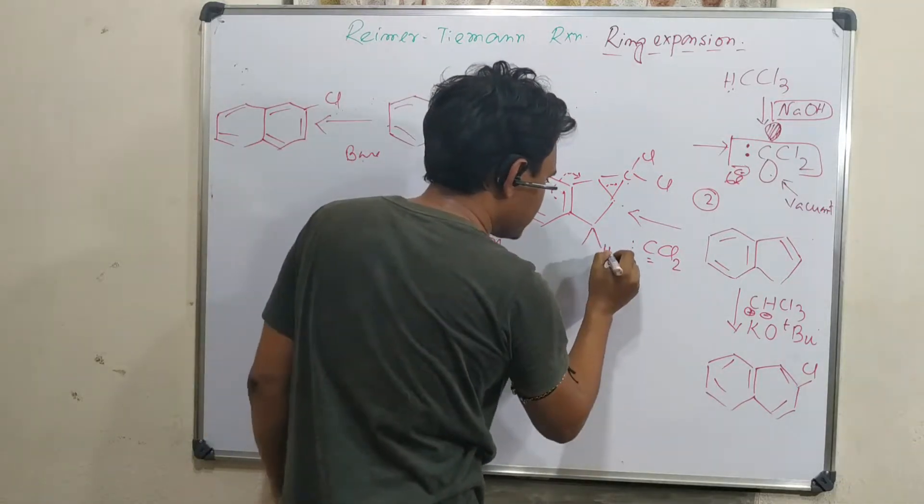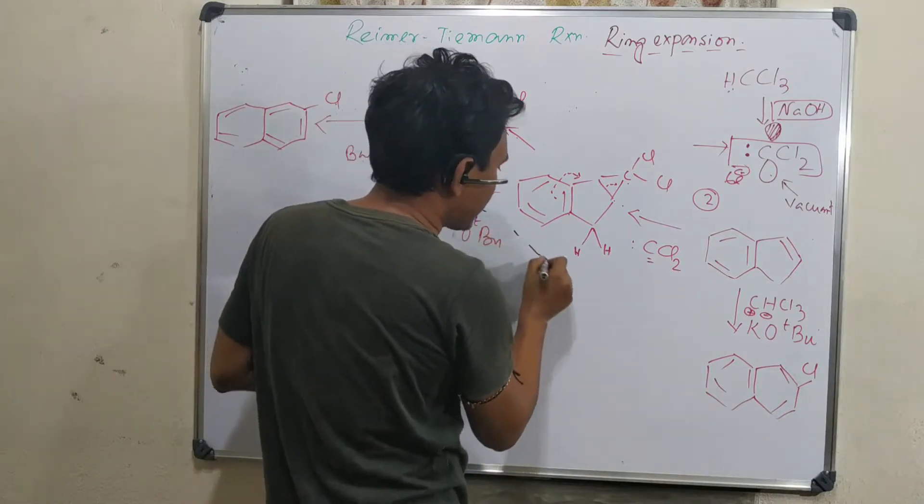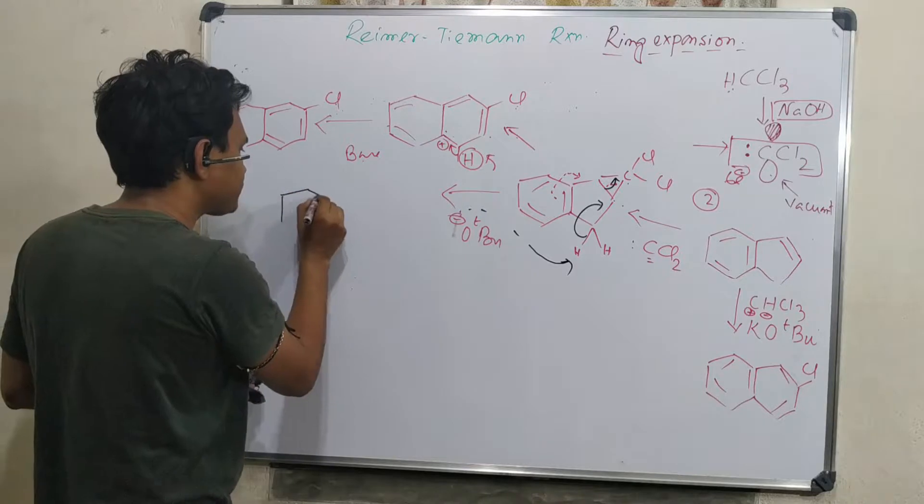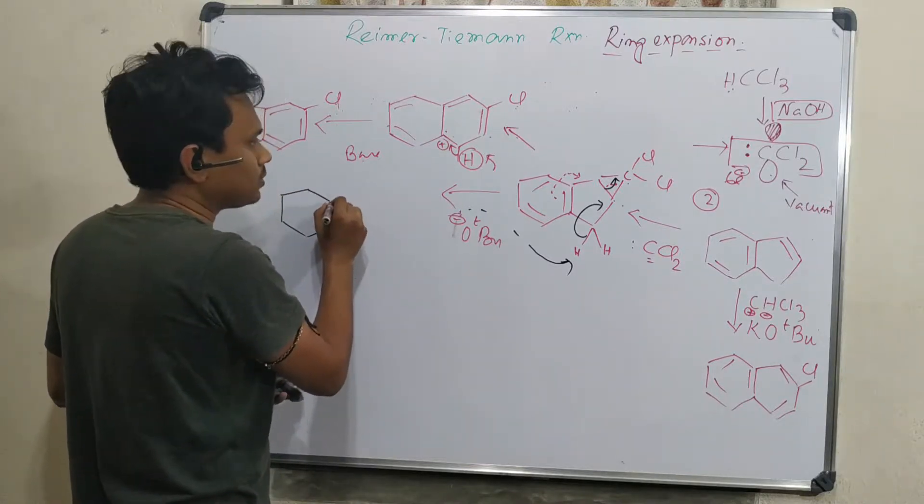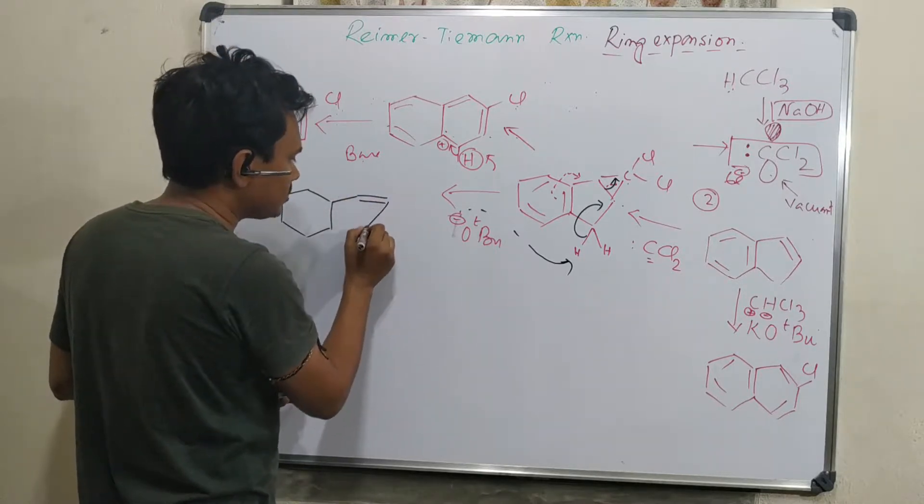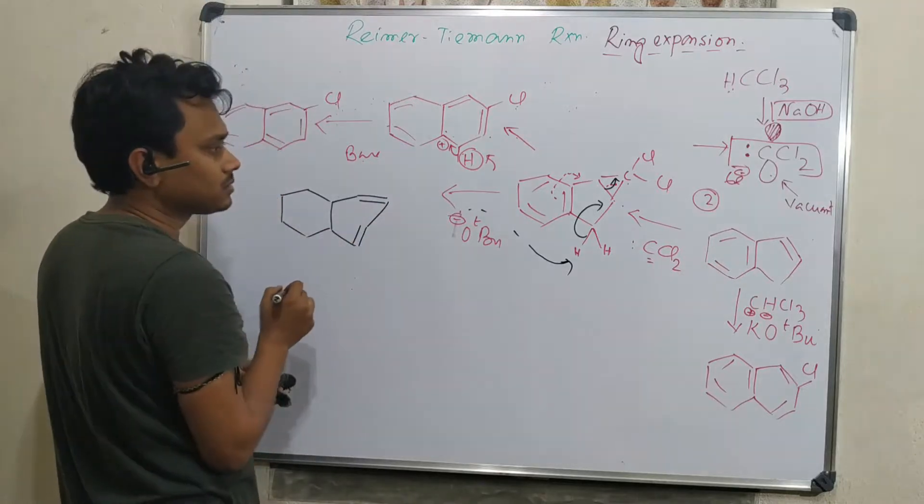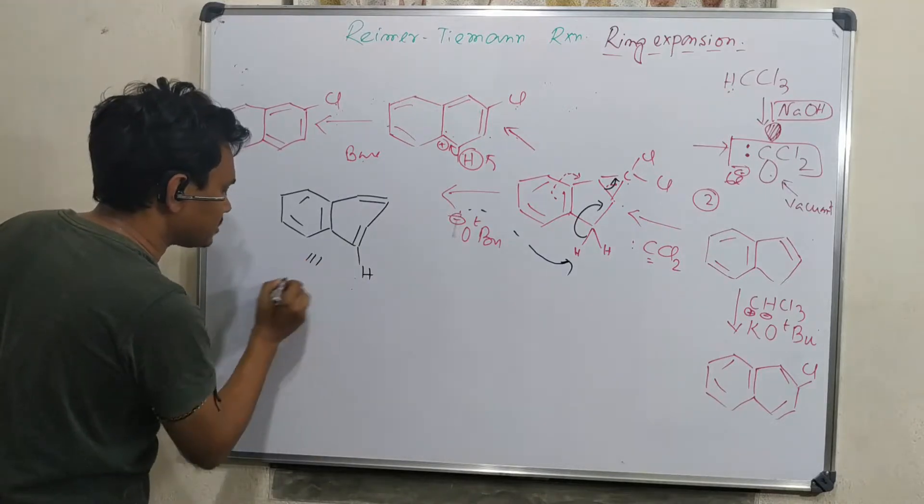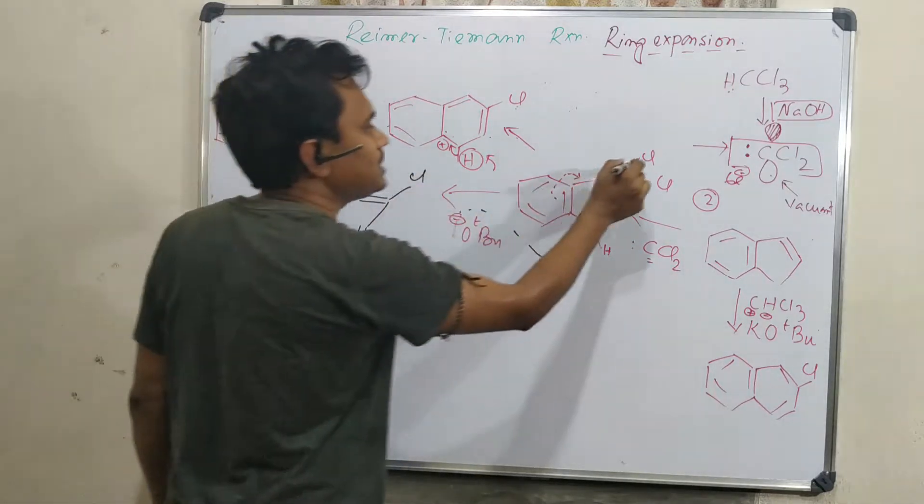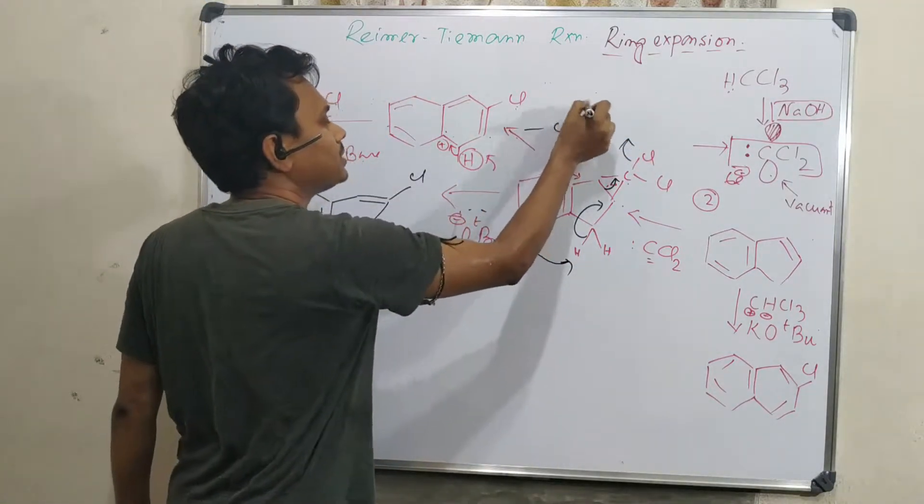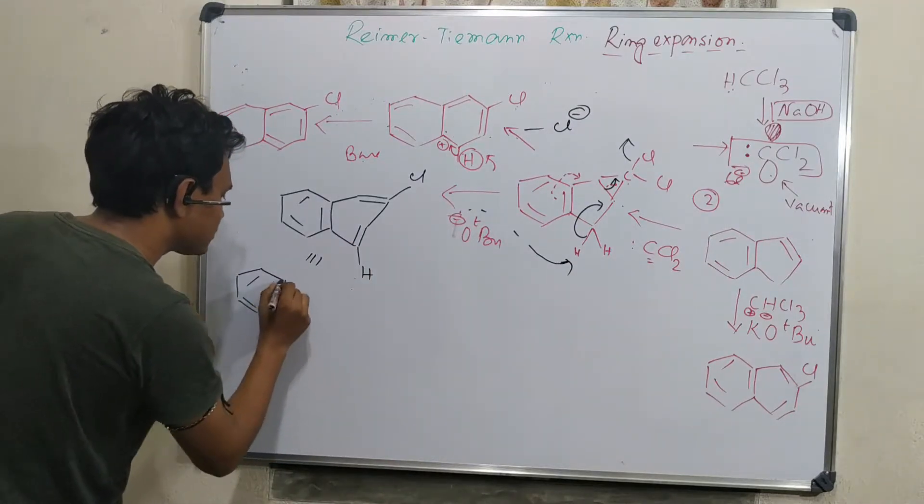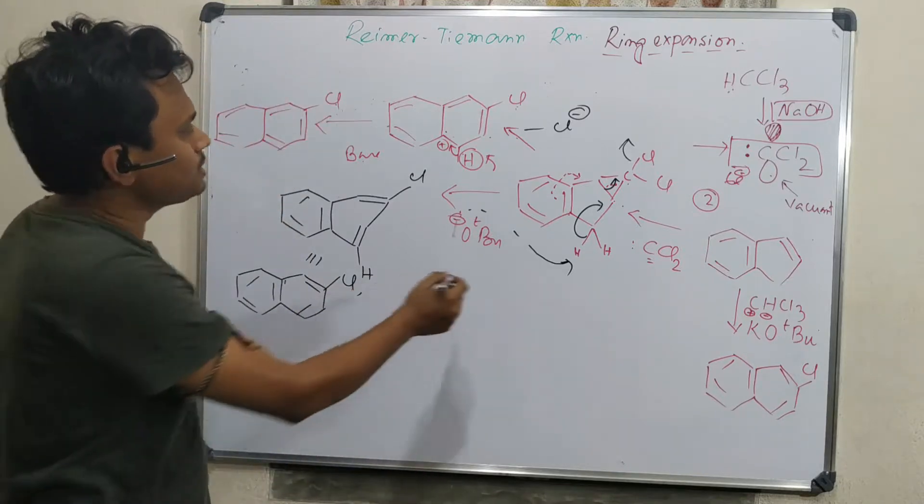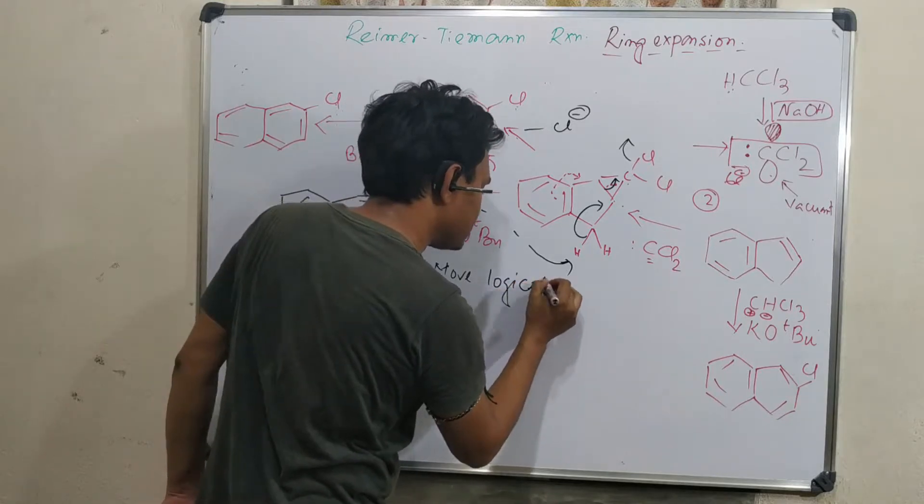Another chance is that this base, this OtBu, can abstract this proton. In this way, it will come here. If it comes here, this bond will go there. Right now, ring expansion occurs and it's a six-member ring. Here should be one chloride because one chloride will leave. This will produce another six-member ring.